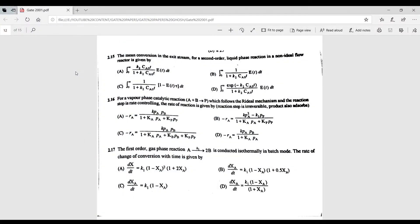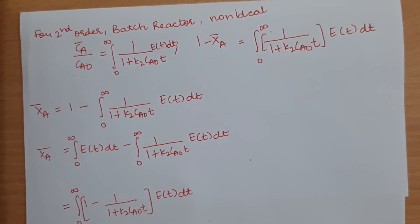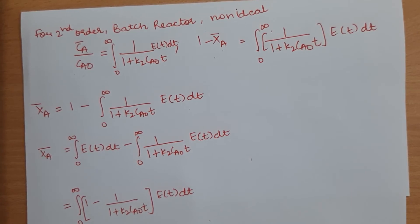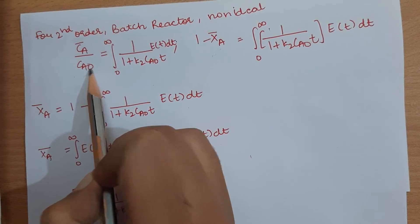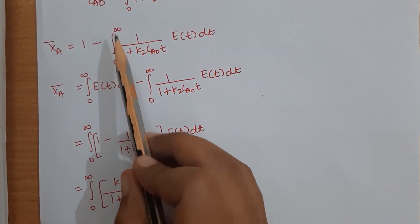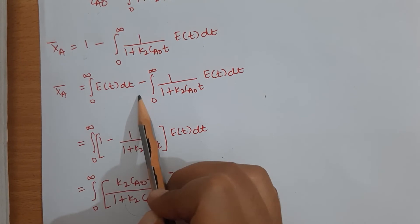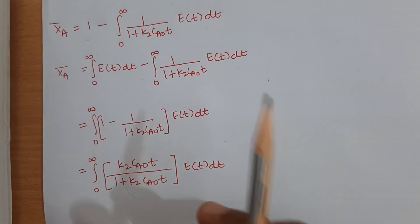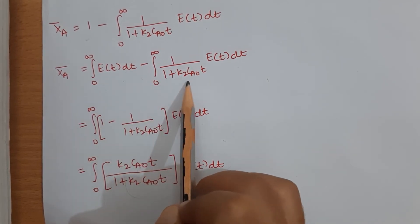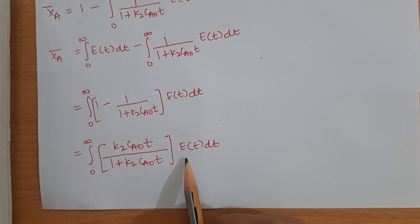Question 2.15: the mean conversion in the exit stream for a second-order liquid phase reaction in a non-ideal flow reactor. Writing C̄A/CA0 = ∫₀^∞ [1/(1 + K₂CA0t)]·E(t)dt, and noting that C̄A/CA0 = 1 − X̄A, the mean conversion is: X̄A = ∫₀^∞ [K₂CA0t/(1 + K₂CA0t)]·E(t)dt.